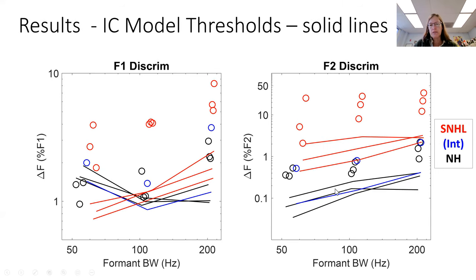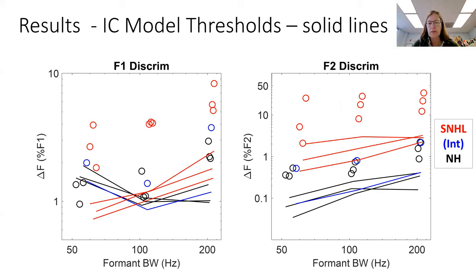Starting with the F2 results, IC model thresholds are lower than those of the listeners, which is good. We focus on the trends rather than the absolute model thresholds, since the absolute thresholds could be adjusted by adding internal noise. So in all cases for F2 discrimination, the thresholds have the appropriate trends, although they're always lower than the listeners' thresholds.